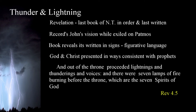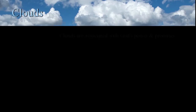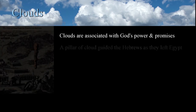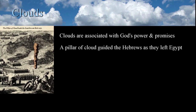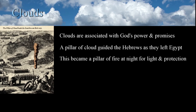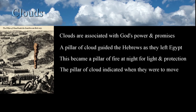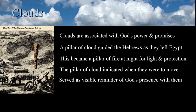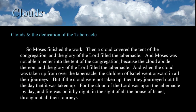Closely related to rainbows, thunder, and lightning are clouds. In the scriptures, we see clouds associated with the power and promises of God. As the Hebrews left Egypt, a pillar of cloud moved over them and later guided them as they traveled. At night, this became a pillar of fire and provided light and protection from the Egyptians who pursued them. The pillar of cloud indicated when they were to break camp and continue on their way to the promised land, serving as a visible reminder of the presence of God with the people. At Sinai, when the tabernacle was dedicated, we find that God manifested his presence and approval.